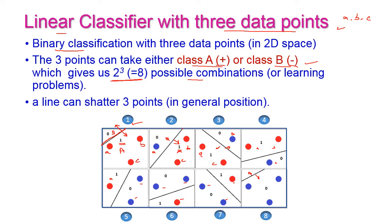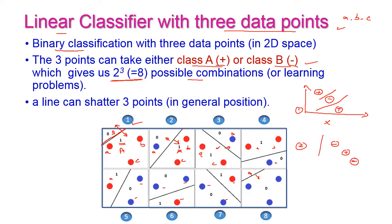However, there is a problem with some combinations. For example, if A is positive, B is negative, and C is positive — with the data points placed like this — by using a linear classifier we cannot classify; this is not at all possible. Another problematic case: A is negative, B is positive, and C is negative. Again, by using a linear classifier we cannot classify the data points. So this is the problem with three data points using the linear classifier.